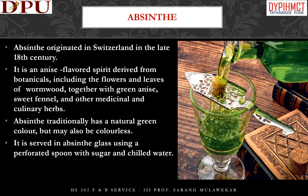Absinthe originated in Switzerland in the late 18th century. It is an anise-flavored spirit derived from botanicals, including the flowers and leaves of wormwood, together with green anise, sweet fennel, and other medicinal and culinary herbs. Absinthe traditionally has a natural green color but may also be colorless. It is served in an absinthe glass using a perforated spoon with sugar and chilled water.